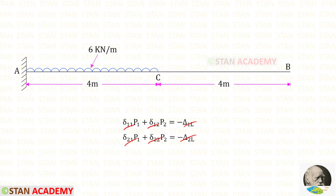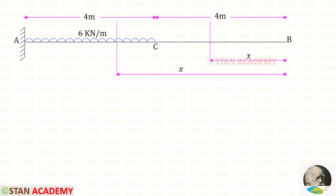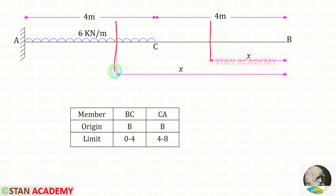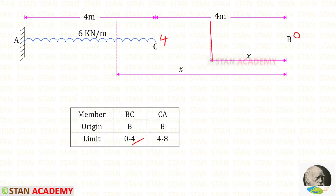In the unit load method, we have to make sections. In this beam there are two different parts: AC and CB. So we have to make two sections, one in AC and one in CB. I have made both sections at a distance of X from point B. For both sections the origin is point B. For the section in BC the limit is 0 to 4, and for the section in CA the limit is 4 to 8.